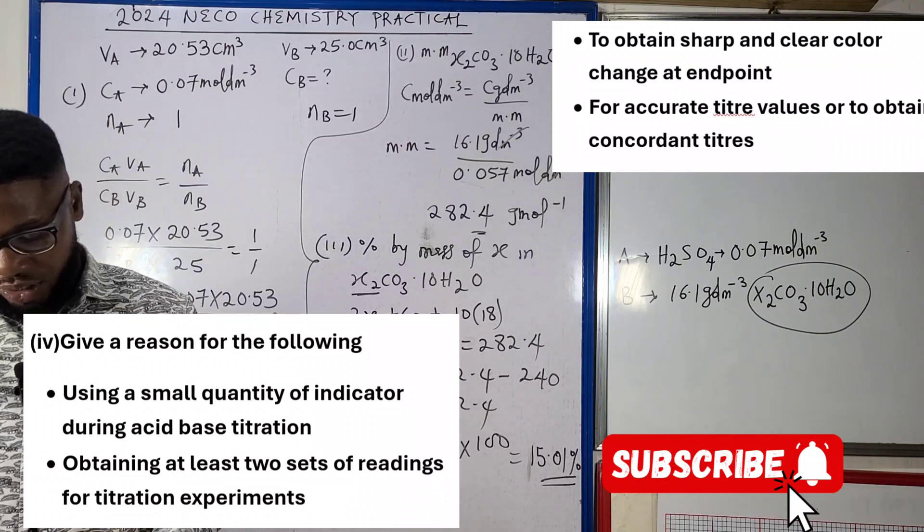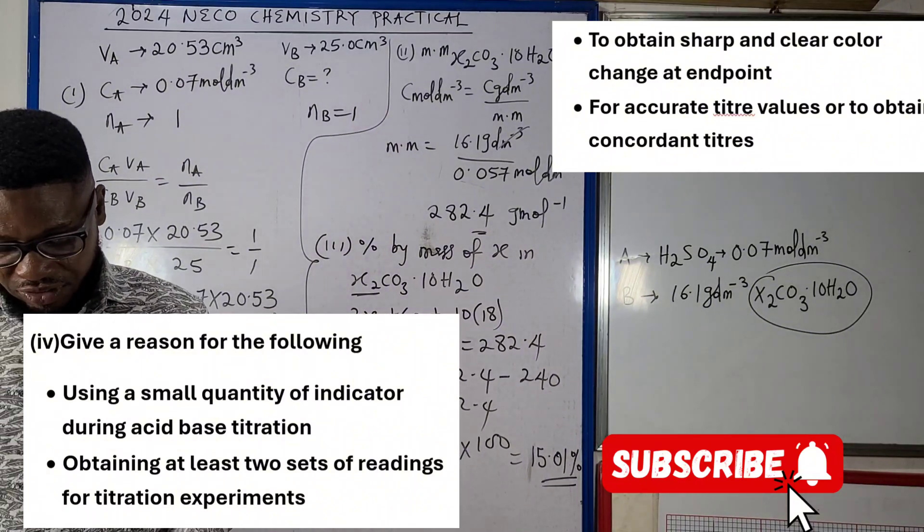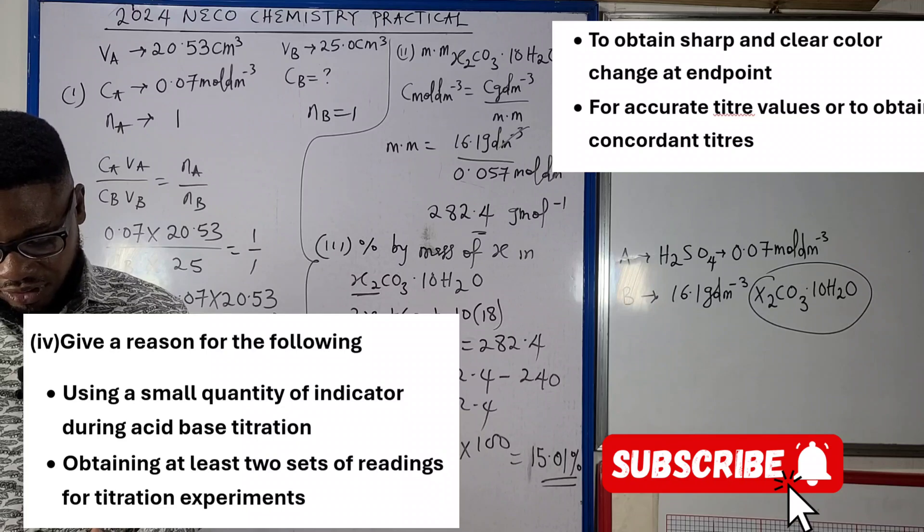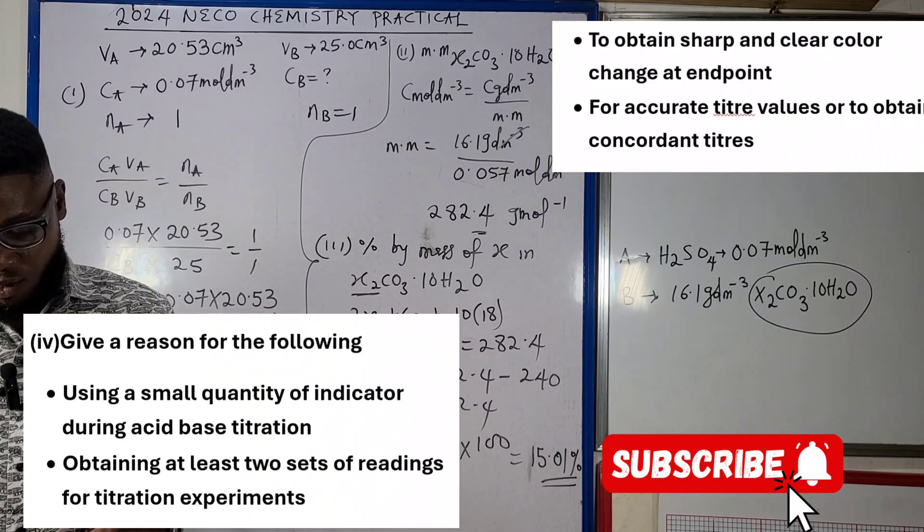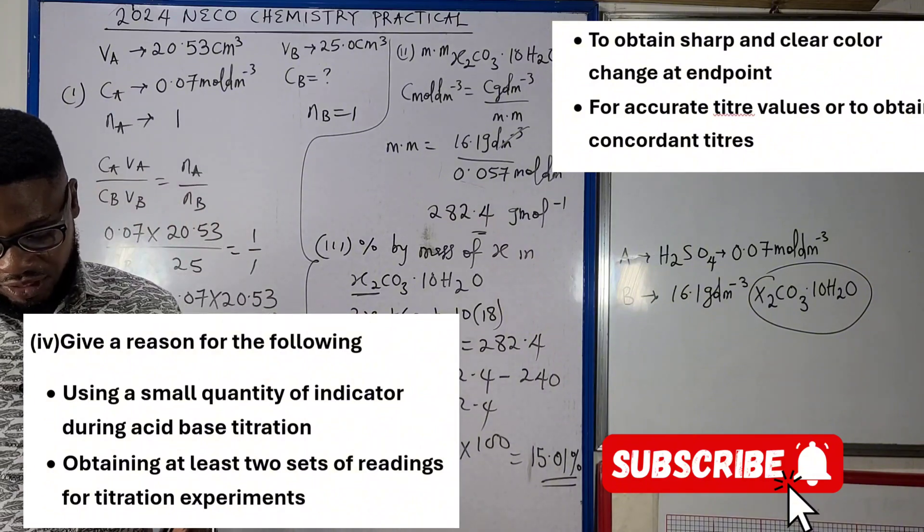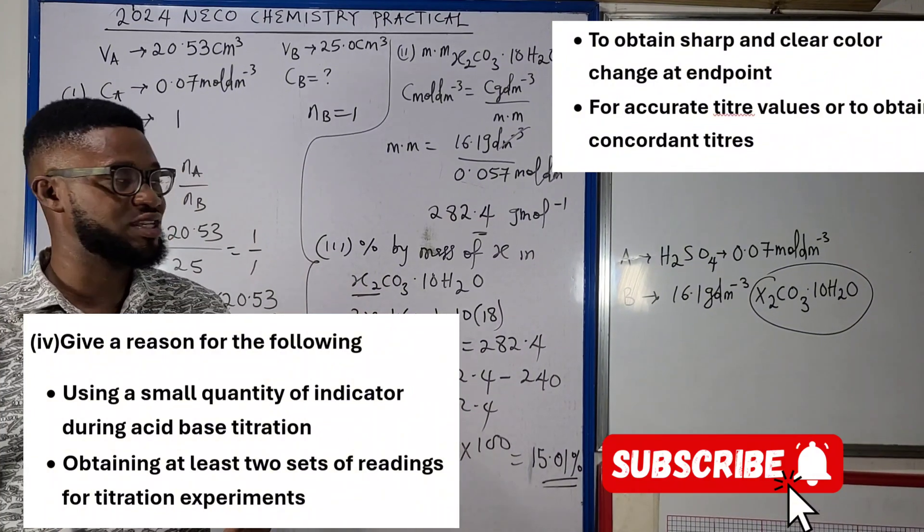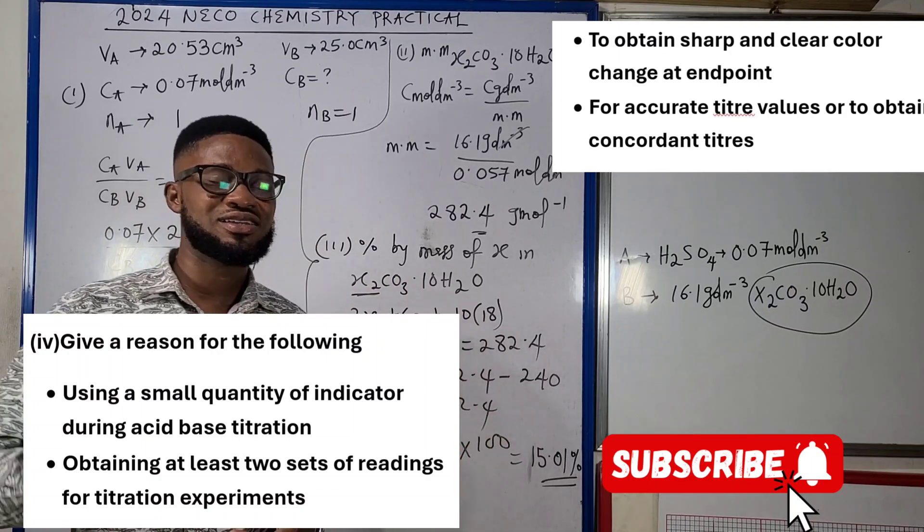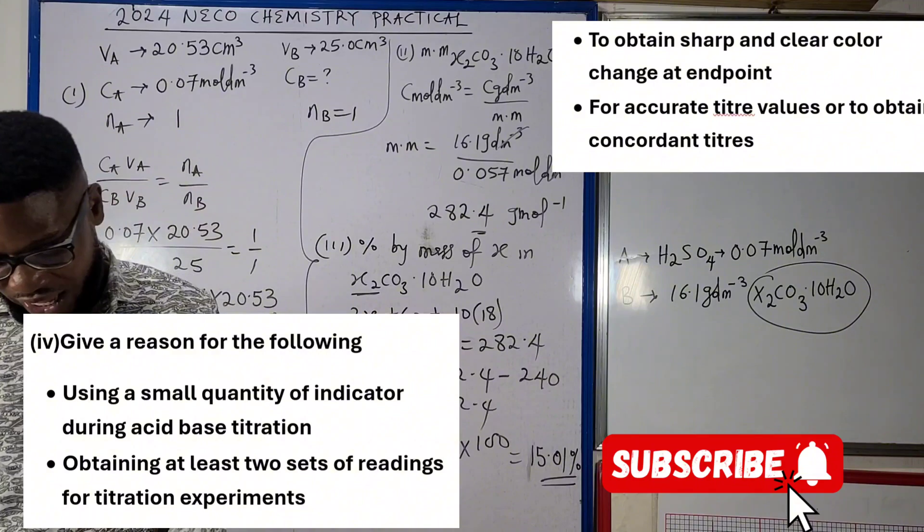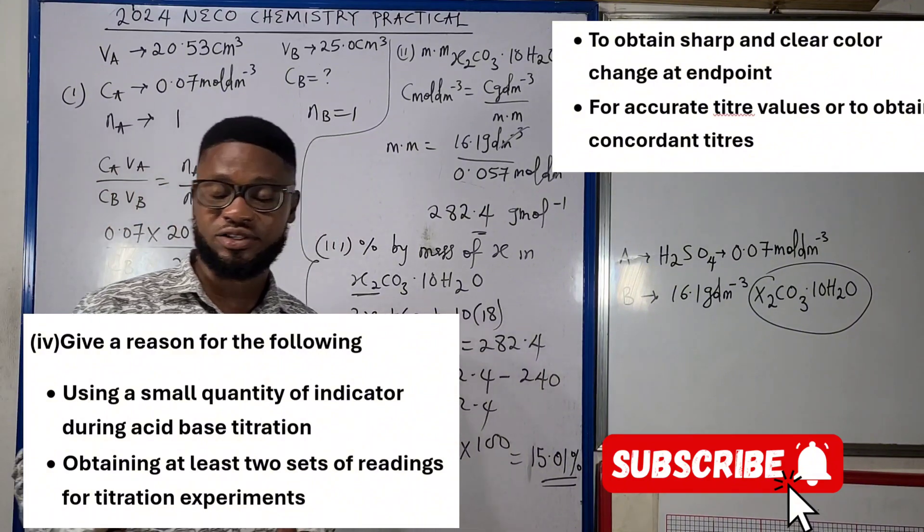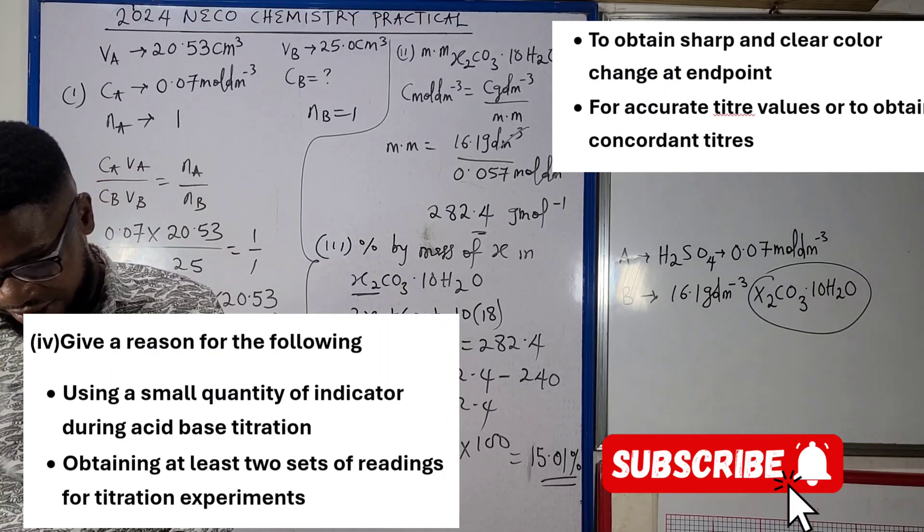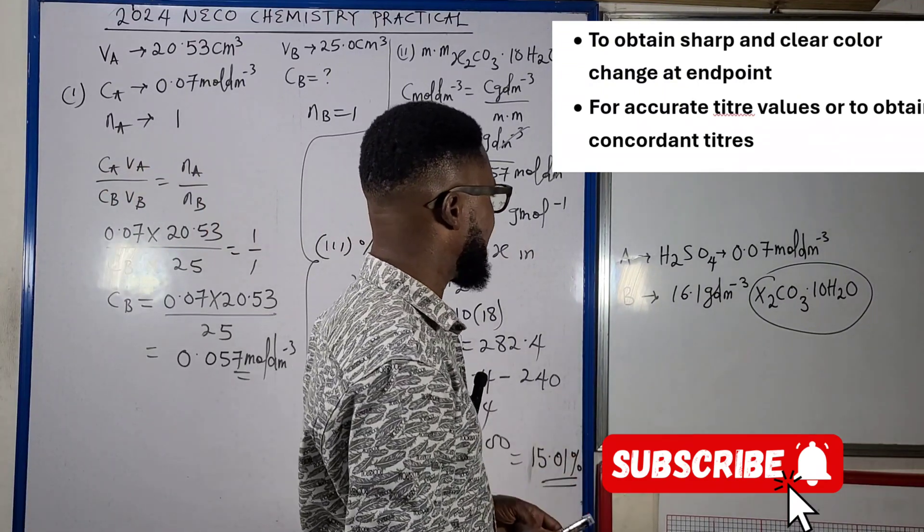Now the other question says we should give a reason why obtaining at least two sets of readings for titration experiment. We should give a reason why we must obtain at least two sets of readings for titration. The reason, if you can see in the table displayed on your screen, the reason why we repeat the titration readings is so that we can get concordant titres or what we call consistent titre values. And that just answers that.